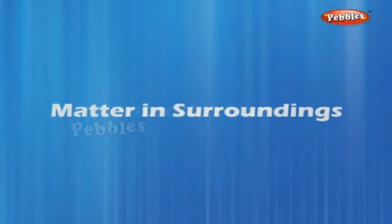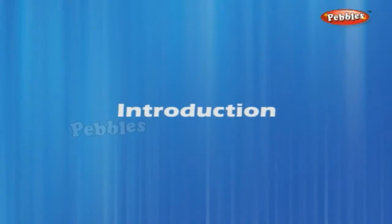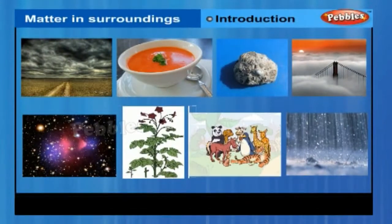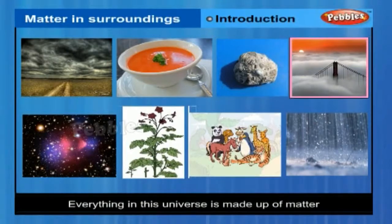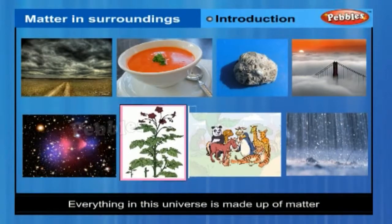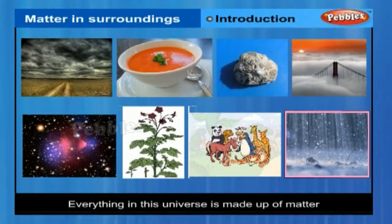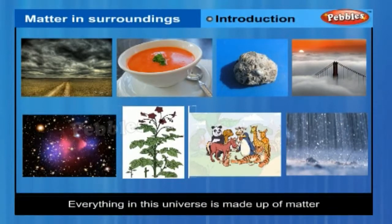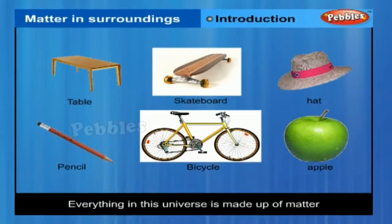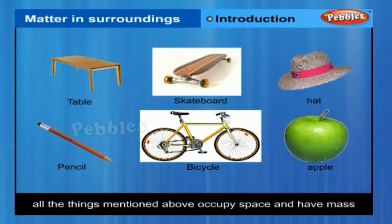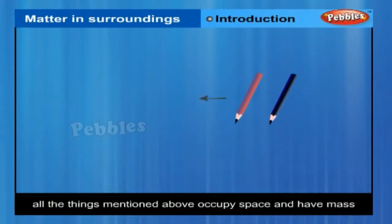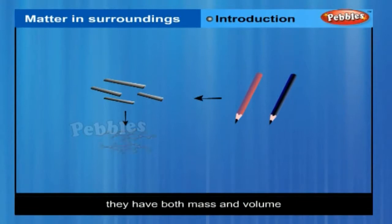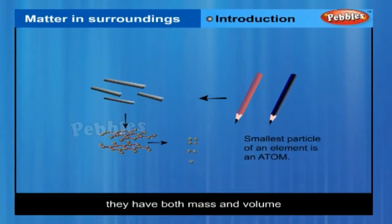Matter and surroundings — introduction. The air we breathe, the food we eat, stones, clouds, stars, plants and animals, even a small drop of water or a particle of sand — everything is matter. All these things occupy space and have mass. In other words, they have both mass and volume. In this chapter we shall learn about matter based on its physical properties.